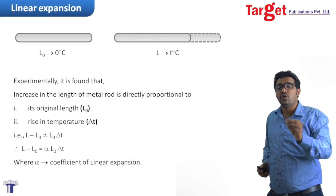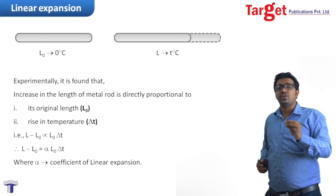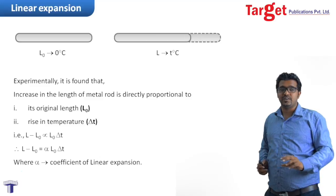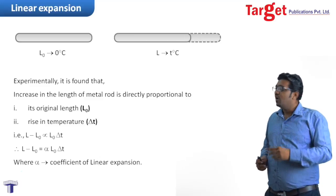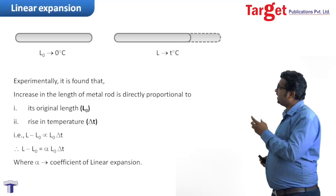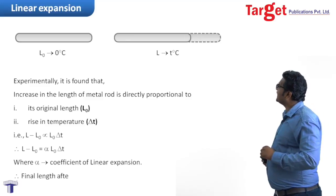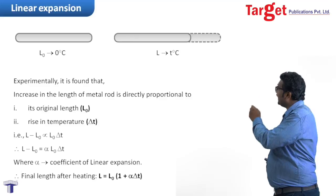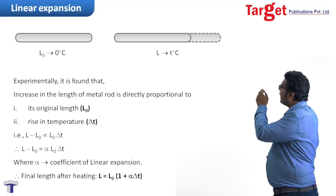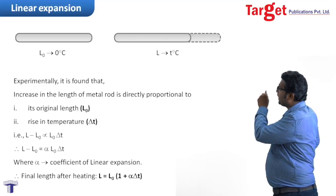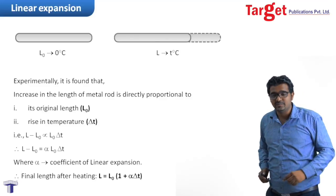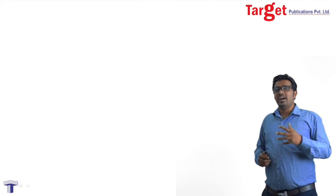Therefore, L minus L₀ is equal to alpha L₀ delta T, where alpha is the Coefficient of Linear Expansion. The final length after heating is given by L = L₀ + L₀ alpha delta T.